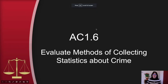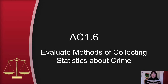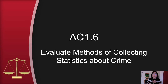This is assessment criteria 1.6. It focuses on evaluating the methods of collecting statistics about crime. This one's a bit on the dull side — it's not particularly riveting or interesting — but you can't really do a course on criminology and crime without understanding how we get to these crime statistics in the first place. So it is necessary; it's just a bit dull. Let's hammer through it.